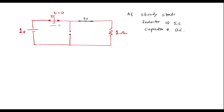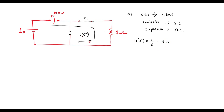The current in the circuit before switching is I of 0 minus. From this circuit, I of 0 minus is equal to voltage divided by resistance, that is 1 over 1 ohm, which equals 1 amp. That is, current through the inductor before switching operation, I of 0 minus, is 1 ampere.